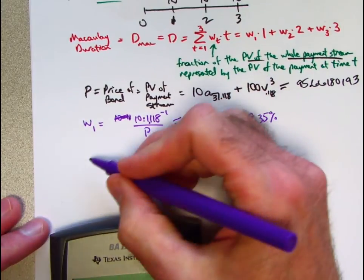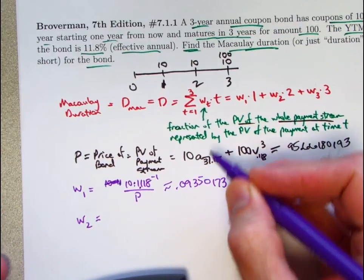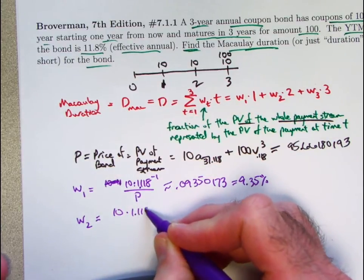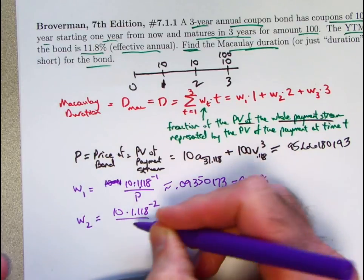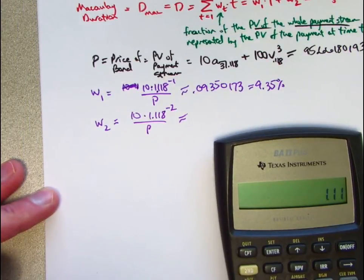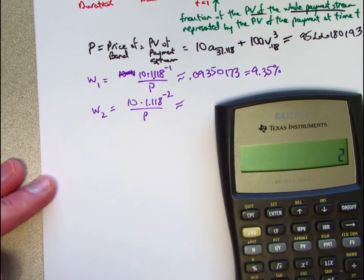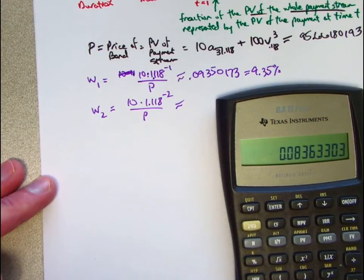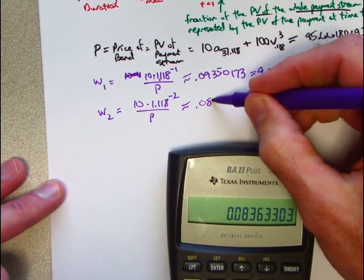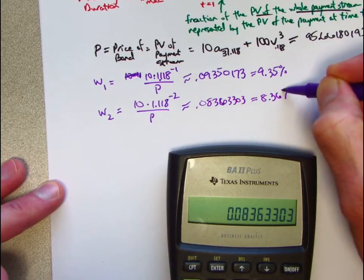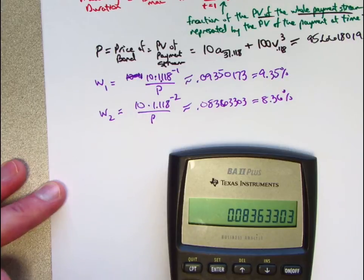On to the next one, W2. Payment at time 2 is 10 as well. That's got to get discounted back by 2 years, 1.118 to the negative 2 power. The fraction, then, I have to divide by P again. 1.118 to the negative 2 power times 10 is this. Divide by P, which is in register 0. This is about 0.08363303, about 8.36%. I'll store that in register 2.